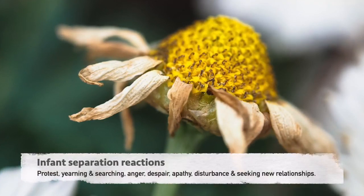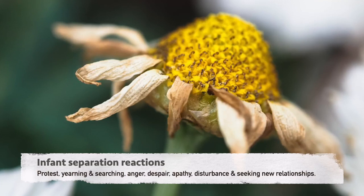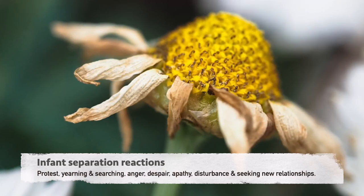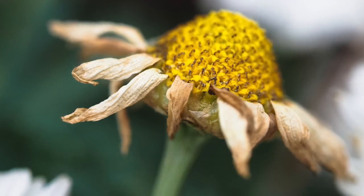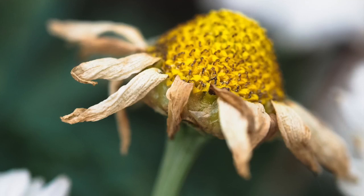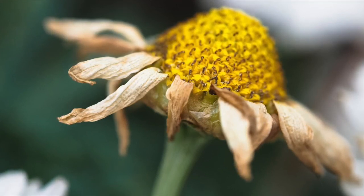There are seven types of infant reactions when introduced to significant separation. These include protests, yearning and searching, anger, despair, sadness and apathy, disturbances, and finally seeking out new relationships. Children may re-enact activities carried out with the lost caregiver if they've developed internal representations and object permanence. There are games of hiding, disappearing, making things gone, and very young children seem able to notice experiences related to death.